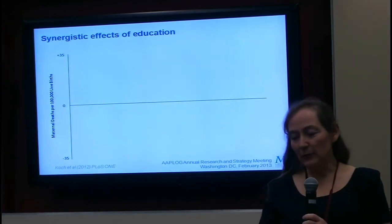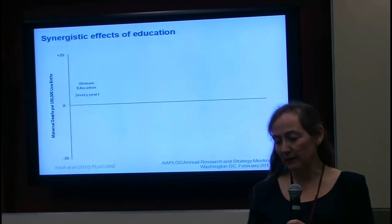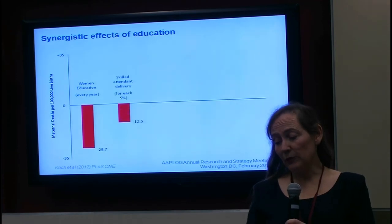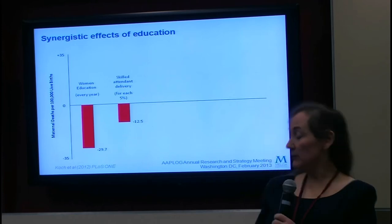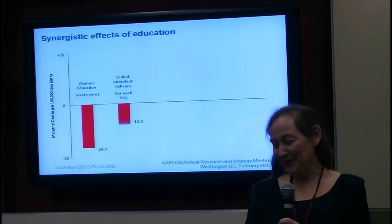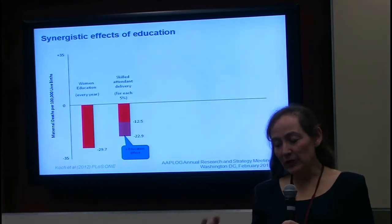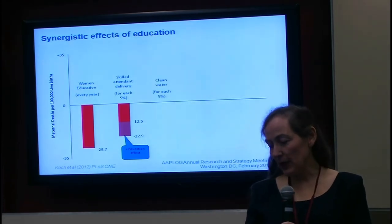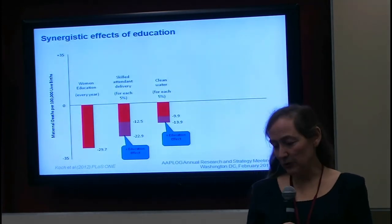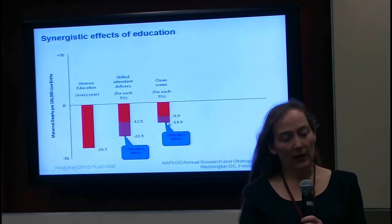One of the more important findings was the synergistic effect of education on other factors affecting maternal mortality. For every year of education, there was a 39.7% reduction in maternal mortality. Skilled birth attendance at delivery resulted in a 12.5-point reduction per 100,000 live births. Controlling for women's educational level produced an even greater reduction in maternal mortality. Similarly, access to clean water and sanitation also affects maternal mortality, and education increases the effect of these public health interventions.